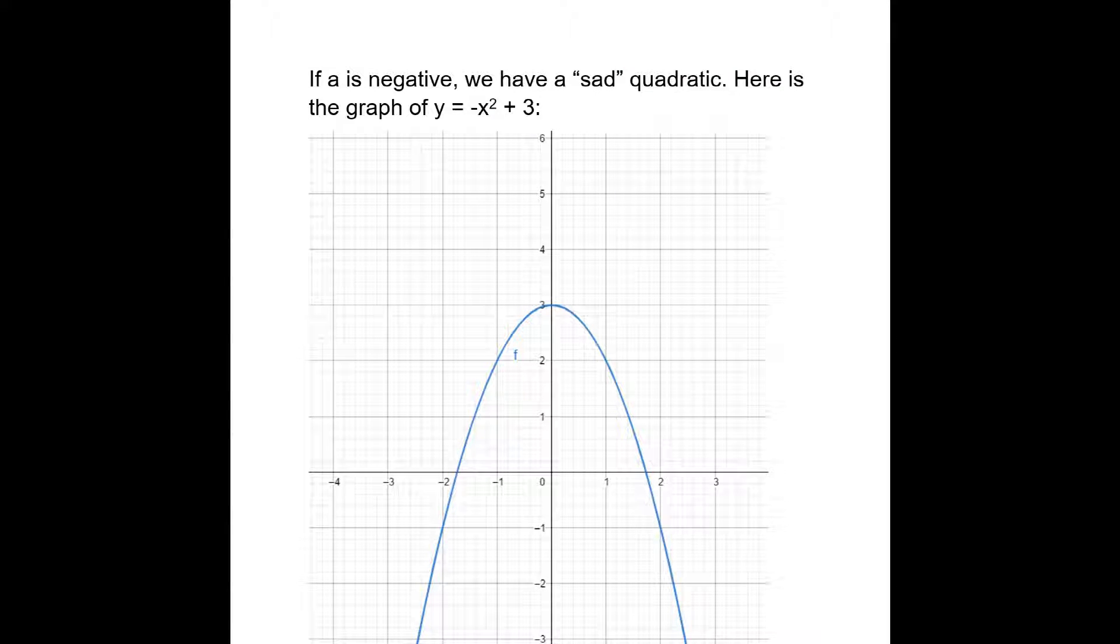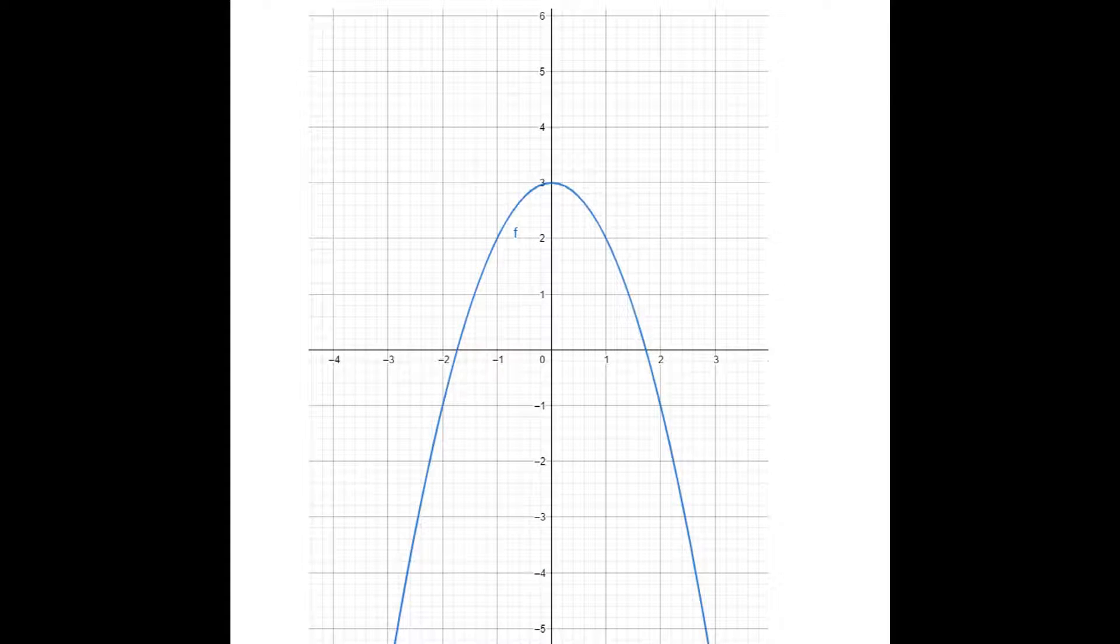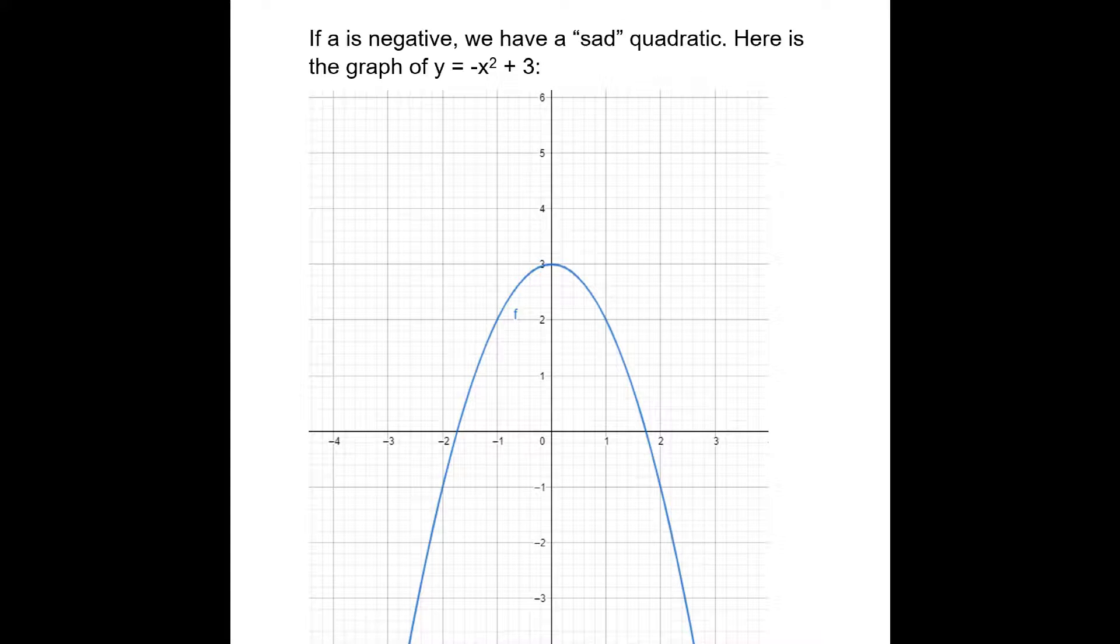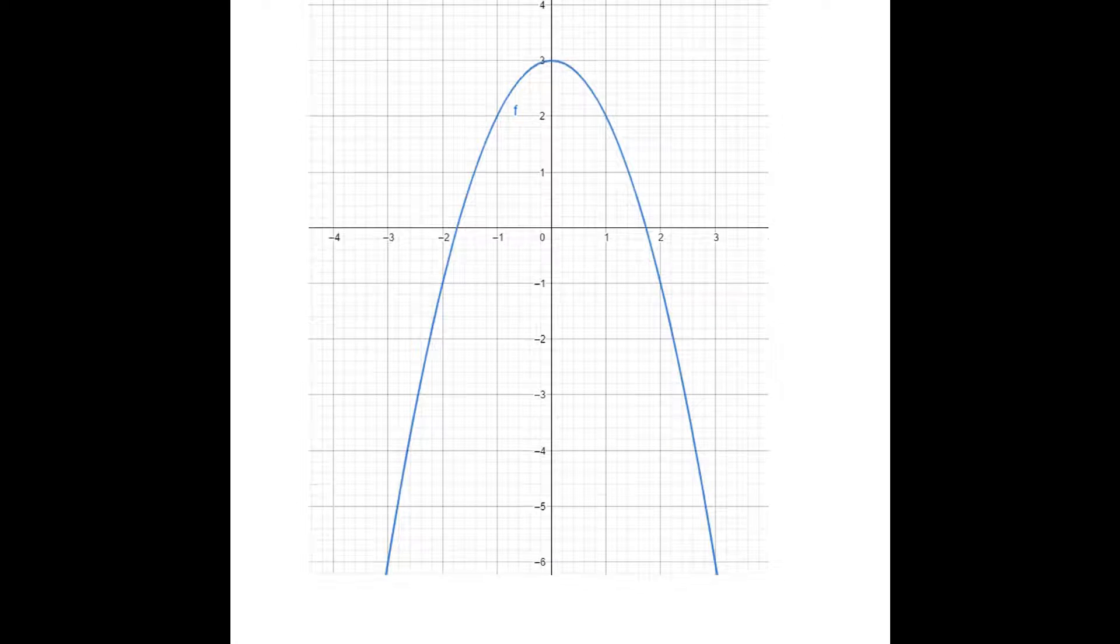As I said before, if the number next to the x squared or the coefficient of x squared, if you like, is negative, we have a sad quadratic. It's negative, it's sad. It basically means it looks like this upside down. So, this is a graph of y equals minus x squared plus 3. So, again, you can see the constant on the end is telling us where the turning point is going to be. It's going to be at (0, 3).